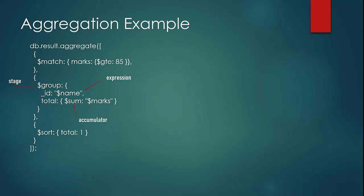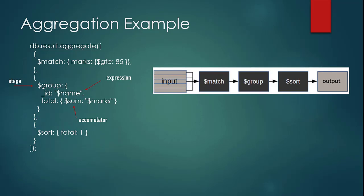So when you provide the input — that is the results collection in this query — the first stage is match, which is matching for a particular criteria. The criteria provided is that marks should be greater than or equal to 85. So all the documents in the results collection matching marks greater than 85 are selected and passed to the next stage.